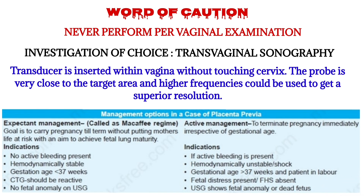For management, there are two options. The first is expectant management, also known as the McAfee regime, where the goal is to carry the pregnancy to term without risking the mother's life. The second is active management, where pregnancy is immediately terminated regardless of gestational age. Expectant management is chosen when there is no active bleeding, the patient is hemodynamically stable, gestational age is more than 37 weeks, and there are no fetal anomalies. Active management is chosen when there is severe bleeding, fetal distress, or the patient is hemodynamically unstable.